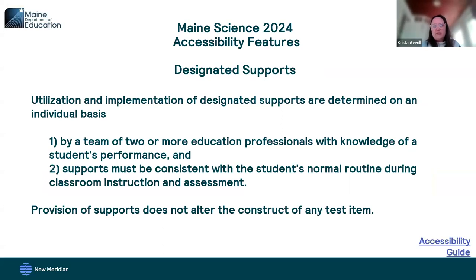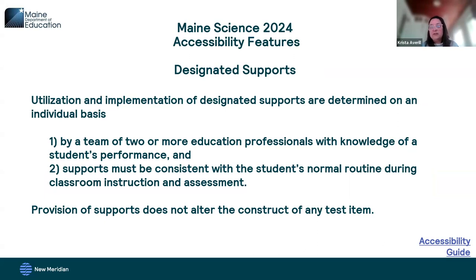The next level up of accessibility features is designated supports. Designated supports are determined on an individual student-by-student basis, provided that two criteria are true: a team of two or more education professionals with knowledge of a student's performance have determined that the support is appropriate for the student, and it's consistent with their normal routine during classroom instruction and assessment. We want to make sure that any supports provided don't change what's being assessed.